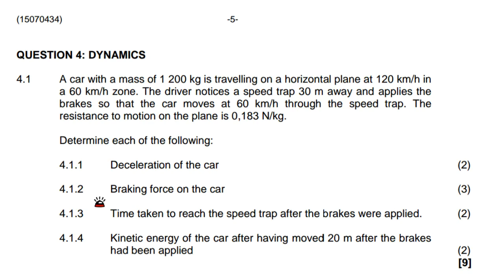A car with a mass of 1,200 kg is traveling on a horizontal plane at 120 kilometers per hour in a 60 kilometers per hour zone. The driver notices a speed trap 30 meters away and applies the brakes so that the car moves at 60 kilometers per hour through the speed trap. The resistance to motion on the plane is 0.183 newtons per kg.